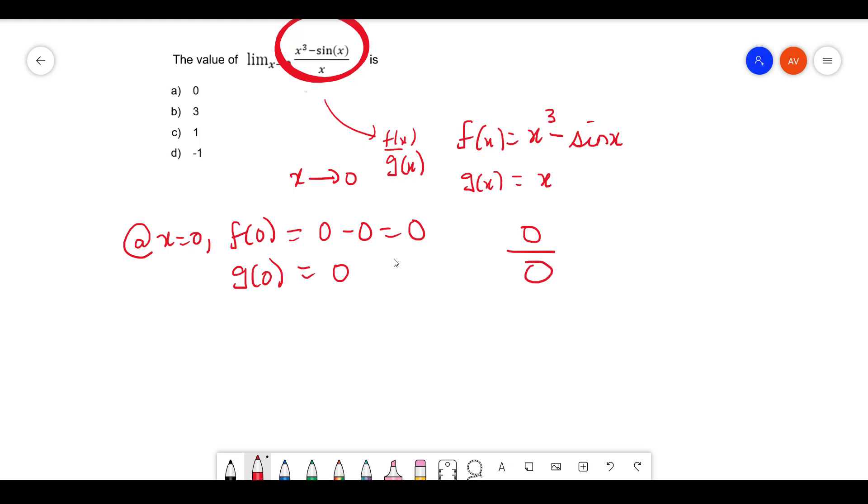According to L'Hôpital's rule, what you can write is this value equals the limit of x tends to 0 of f'(x) by g'(x). That is again limit of x tends to 0...